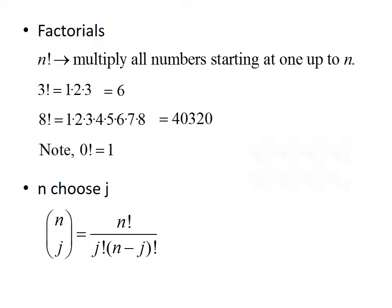The other topic we need to discuss is n choose j. If you see a set of parentheses with an n above a j, that's called n choose j, and we evaluate it using this formula: n choose j is equal to n factorial divided by j factorial times n minus j factorial.